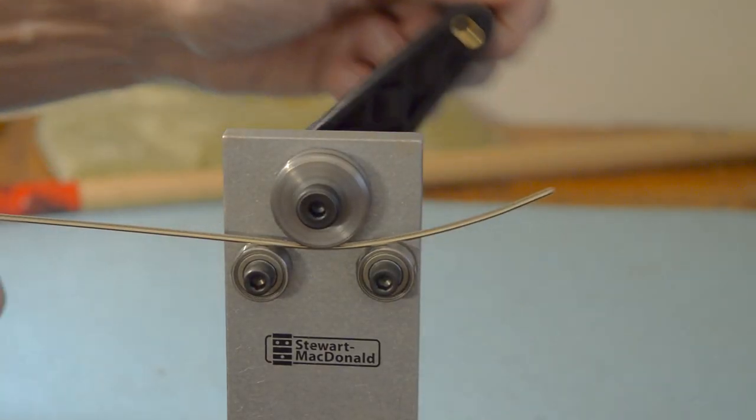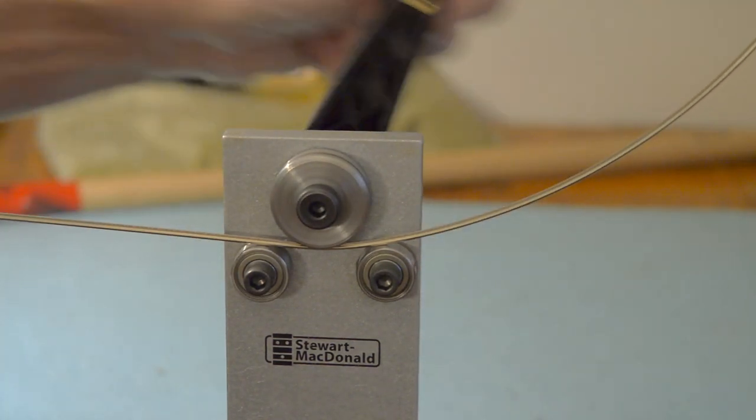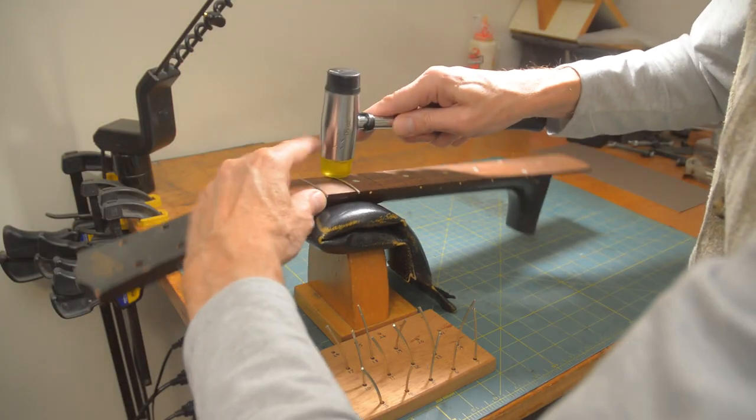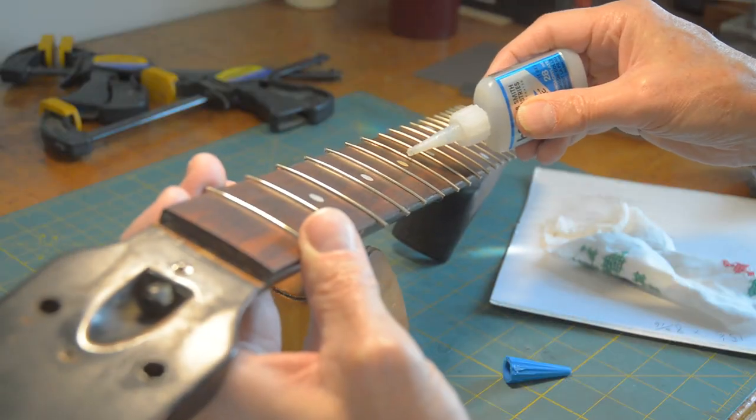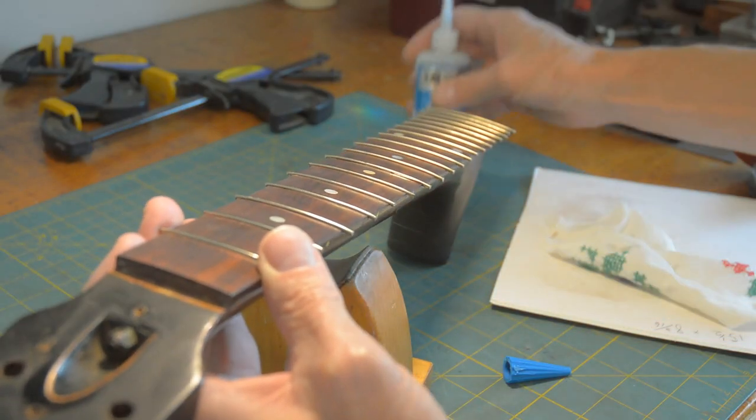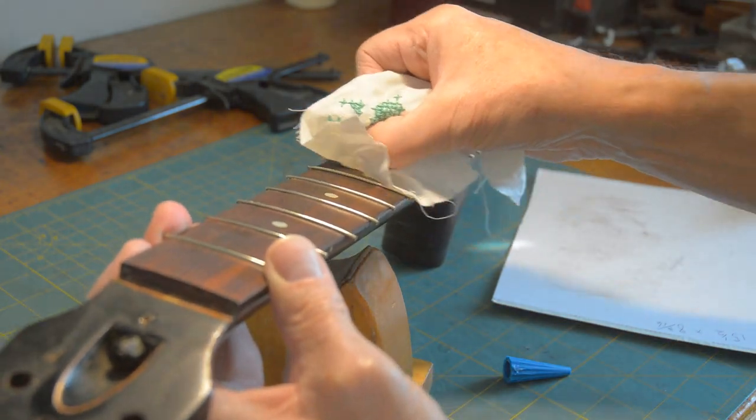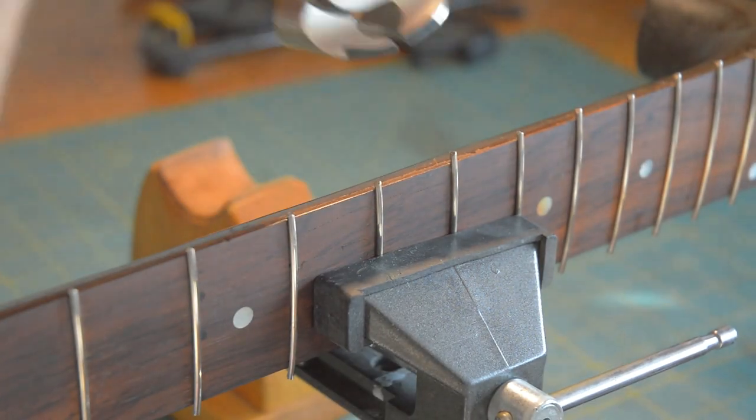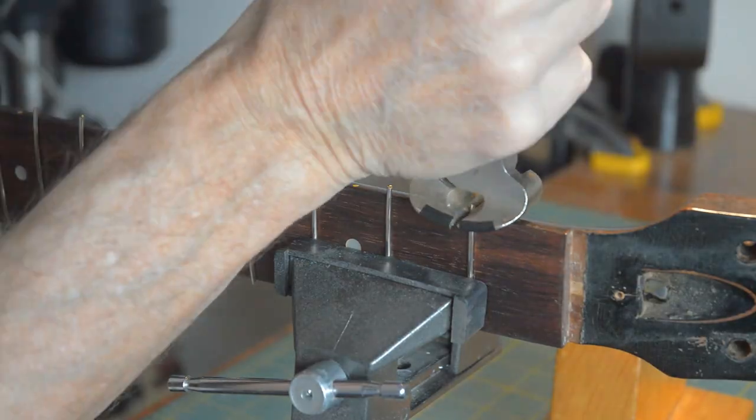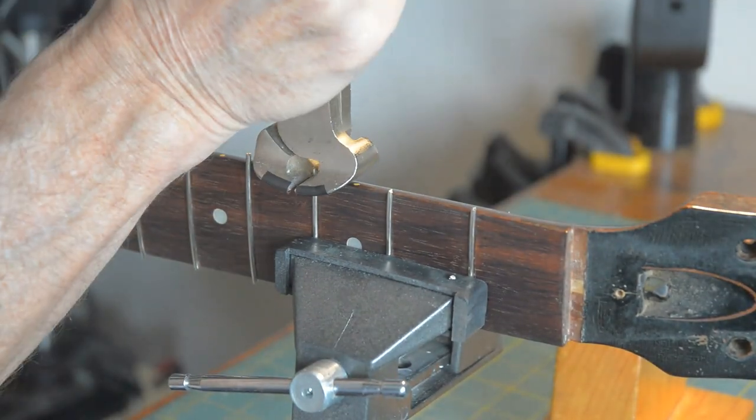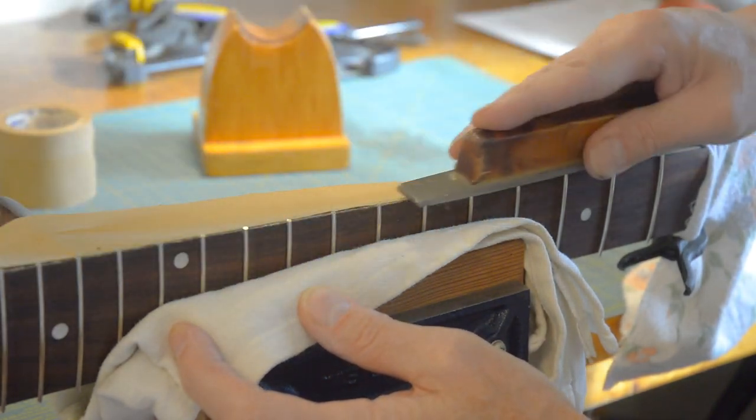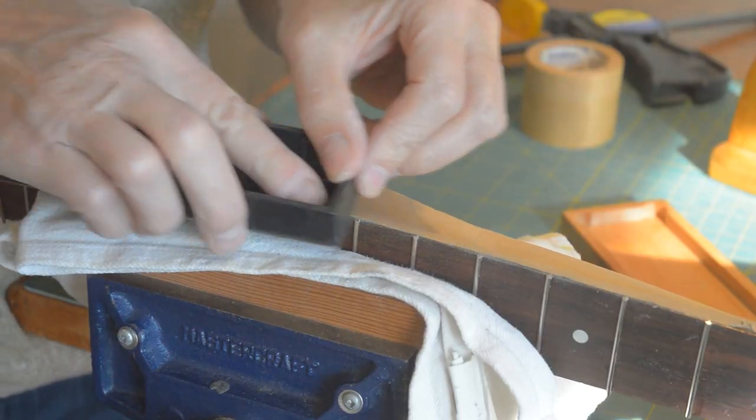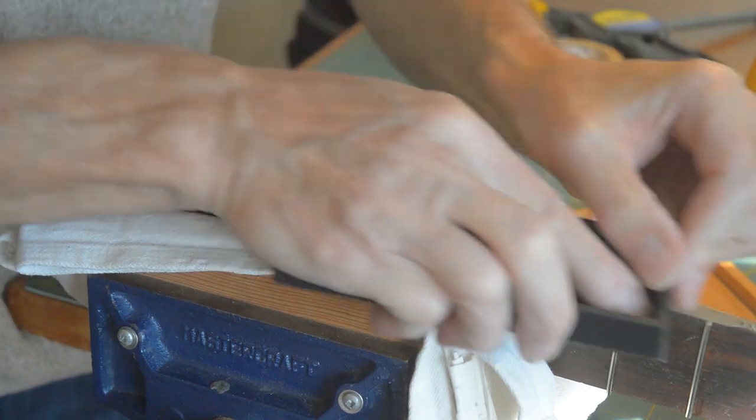This fret wire bending tool is a must have. After I get them all cut to length, I pound them in. And then add some super glue to just ensure that they don't come loose. Just nip off all the little ends. And then this homemade file on a wooden block. And then a diamond stone takes off all the rough ends.